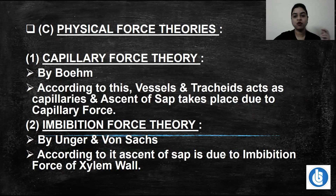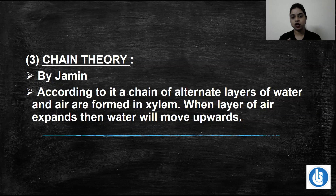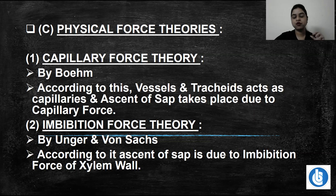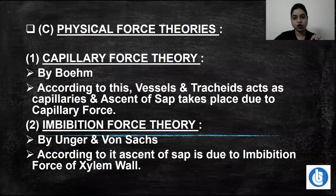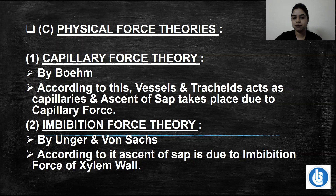Here, the imbibition force — which involves the xylem wall — is responsible for pushing water molecules upward. The imbibition force is so strong that water molecules can rise very high. However, the problem is that imbibition is a surface phenomenon, and a surface phenomenon is not always continuously necessary. Because once the water has been absorbed, the imbibition no longer remains. So that is the conditional limitation of the imbibition force theory.